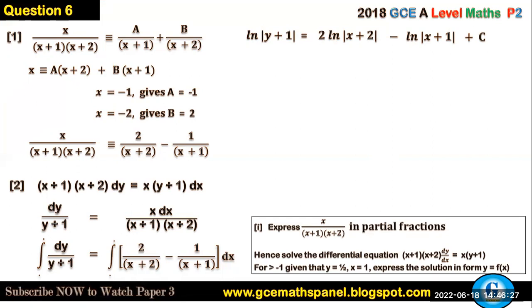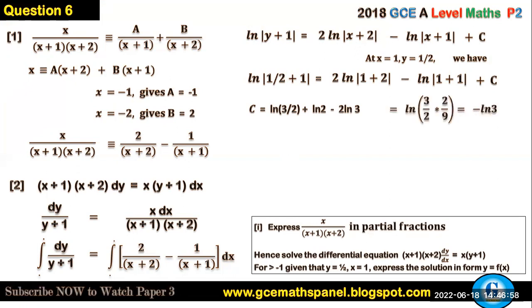This question tells us that for x greater than -1, given that y equals 1/2 when x equals 1, express this in the form y = f(x). So they want us to first find this constant. At the point where x equals 1 and y equals 1/2, we substitute: ln(1/2 + 1) = 2ln(1+2) - ln(1+1) + C. Simplifying gives us C = ln(3/2) + ln2 - 2ln3, which equals -ln3.